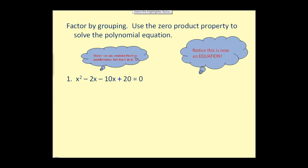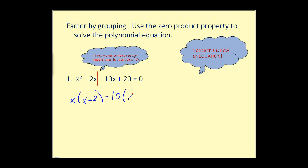Let's look at this problem, which says to factor by grouping and then use the zero product property to solve the polynomial equation. Notice this is an equation, not an expression — it has an equal sign. Even though we could combine the middle terms since they are like terms, let's factor by grouping instead. Cutting it in half, the GCF of the first two terms is x, leaving us with x minus two. The GCF of the second two terms is ten, but since we need an x minus two factor, we factor out a negative ten, leaving us with x minus two equals zero. We have our common binomial factor of x minus two, so we factor that out, leaving x minus ten equal to zero.